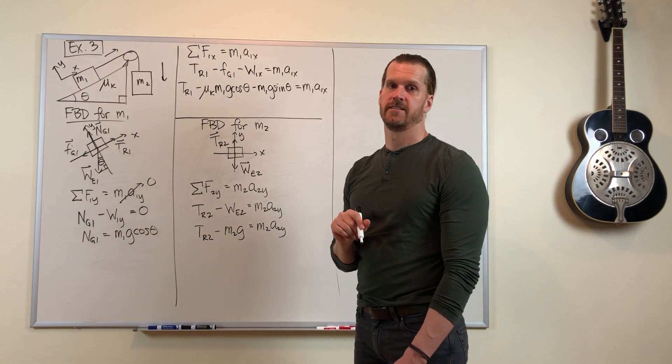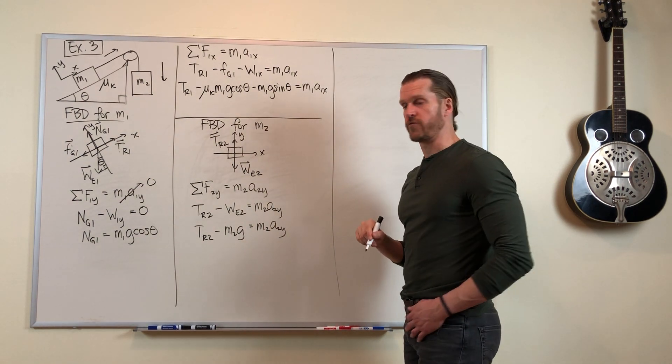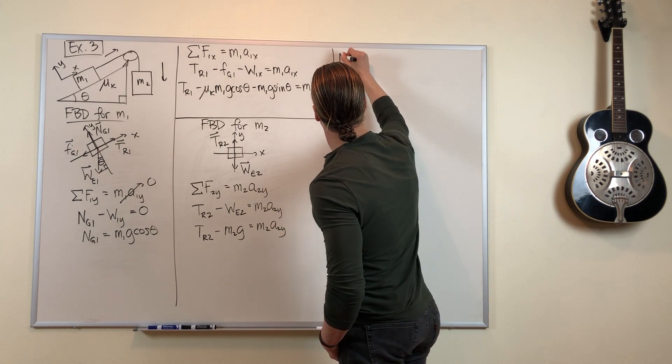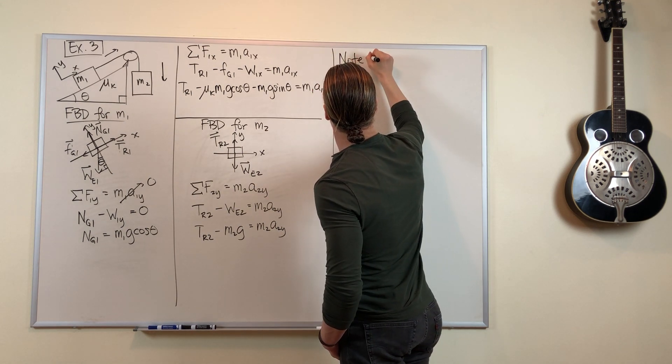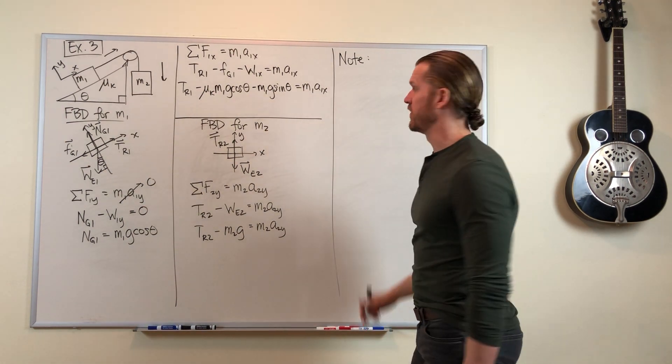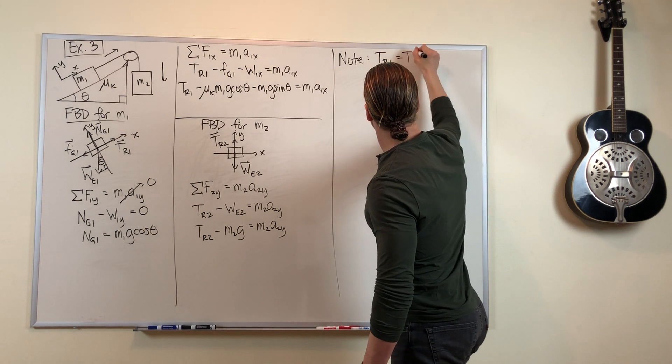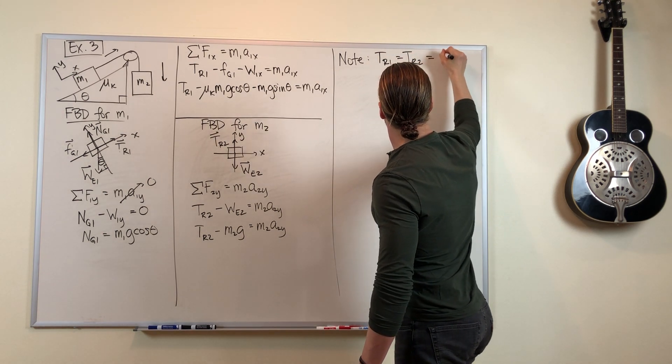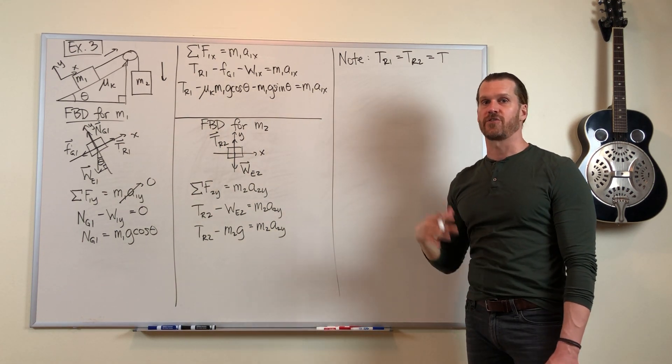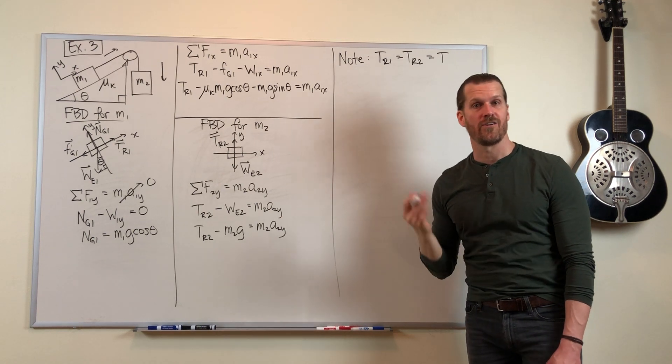So we use some common sense and things we know about ropes and strings. The tension force is the same everywhere in this rope. So we might as well drop those subscripts and just call both of these T, because they are the same value.